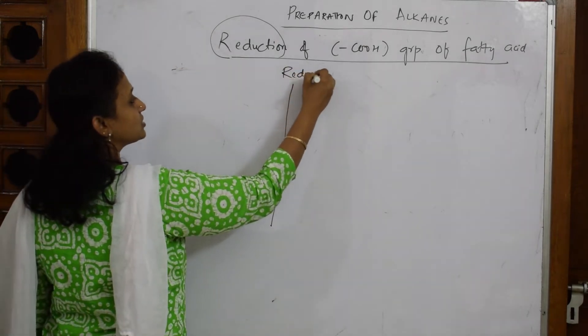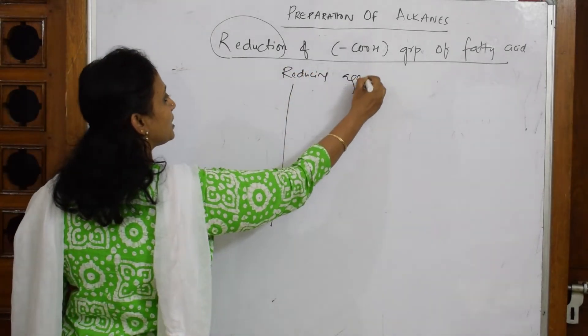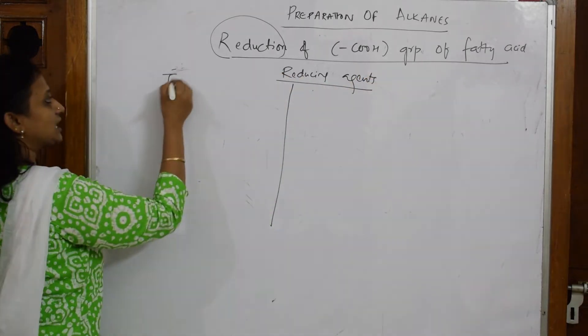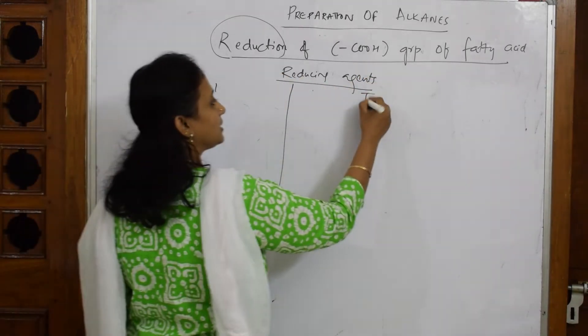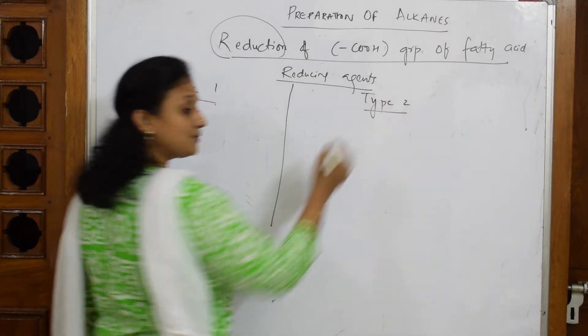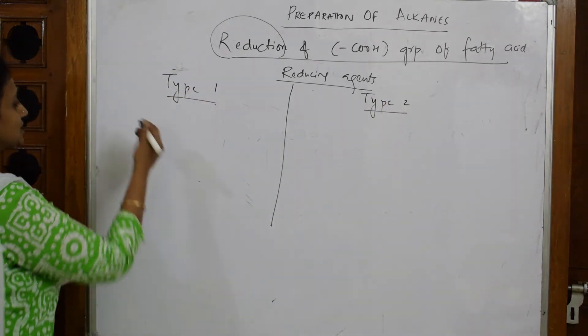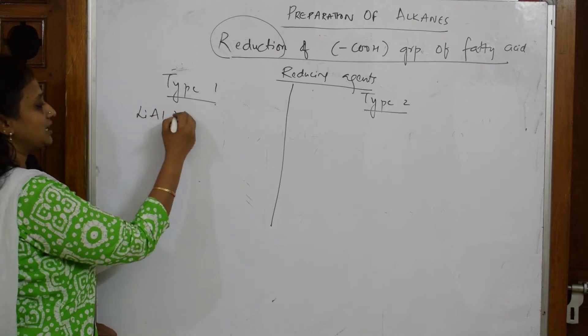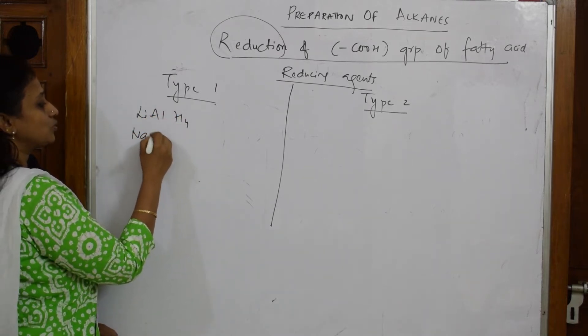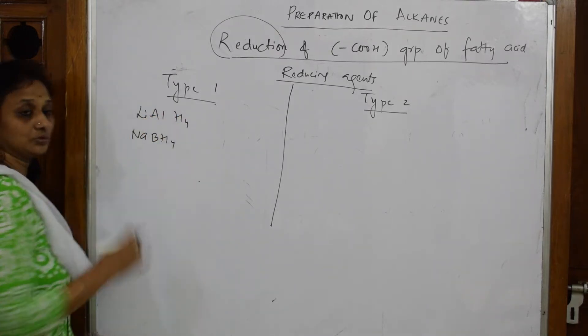When I say reducing agents, remember this: we have two categories, type 1 category and type 2 category. Type 1 category reducing agents are like lithium aluminum hydride, sodium borohydride.